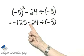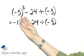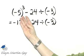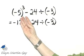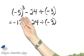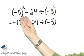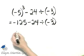Now be very, very careful. It's your choice. I'm going to look at this as 24 divided by negative 3. 24 divided by negative 3 is negative 8.